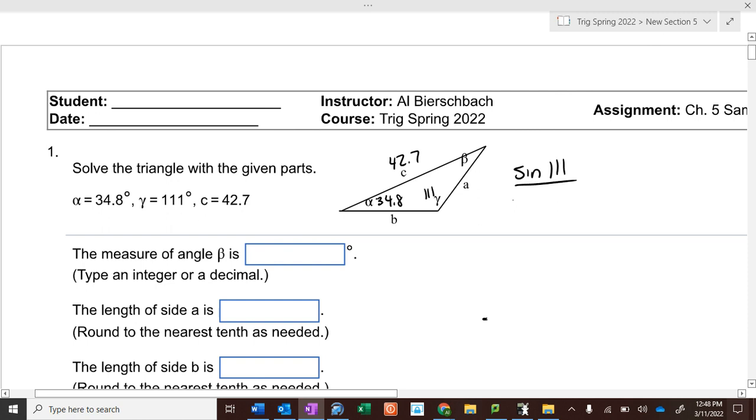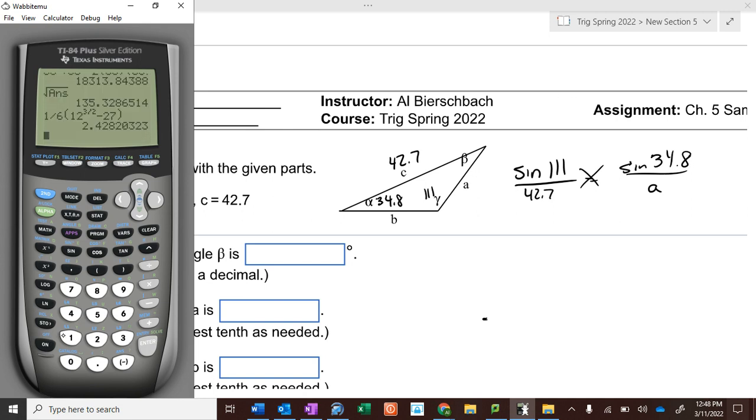So the sine of 111 over 42.7 equals the sine of 34.8 over a. And we can cross multiply, so 42.7 times the sine of 34.8 divided by the sine of 111, and we get 26.1.